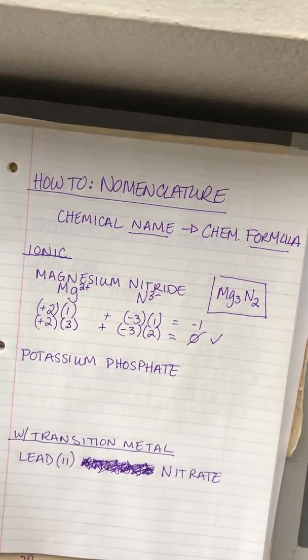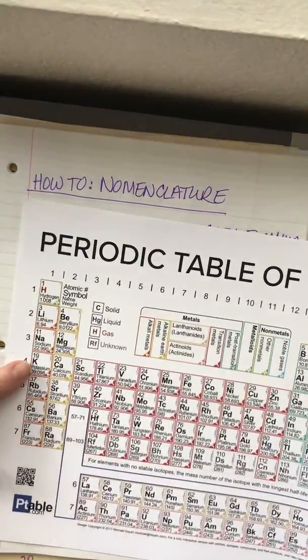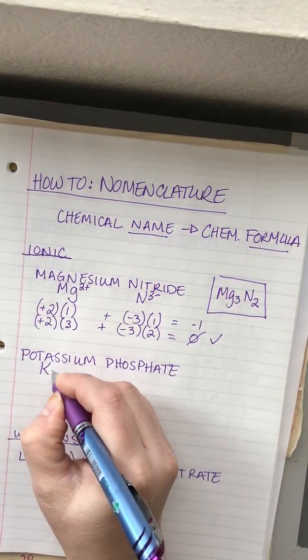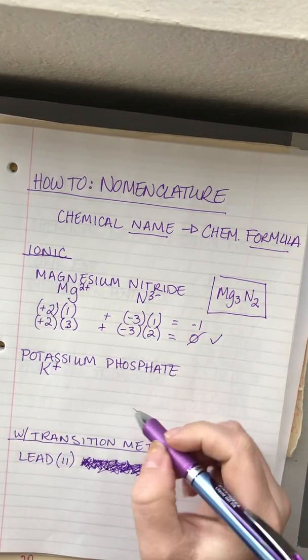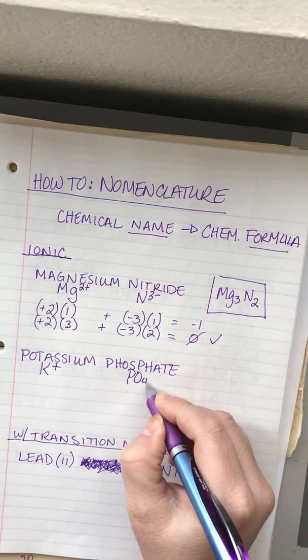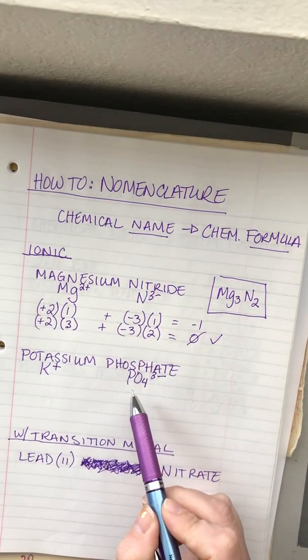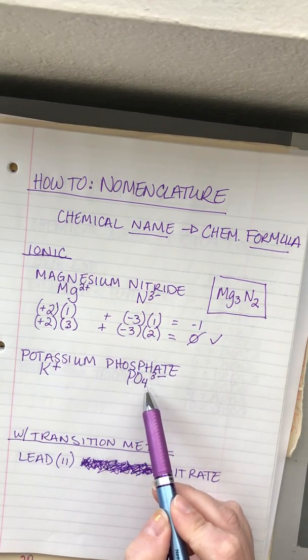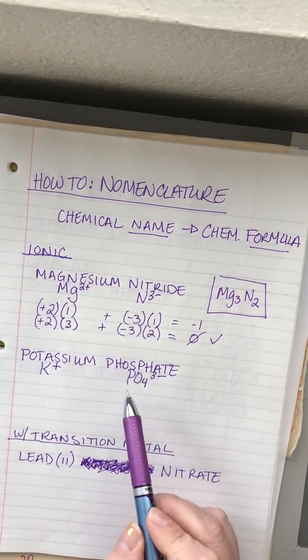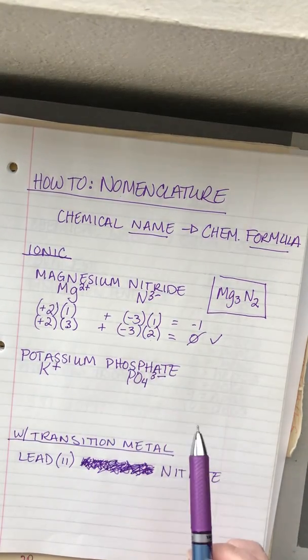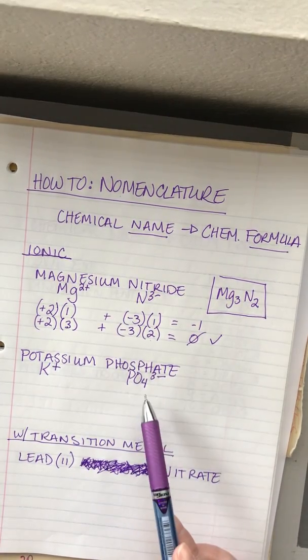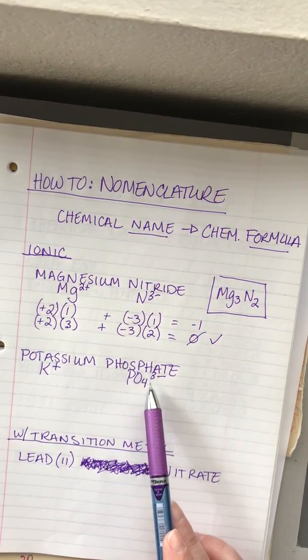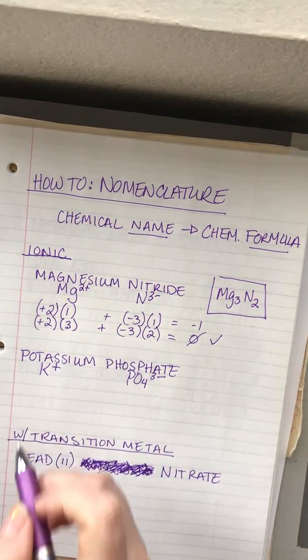Next up we have potassium phosphate. Potassium is in group 1, which means it will have a plus 1 charge. Phosphate is from our list of polyatomic ions and has a chemical formula of PO₄³⁻. This is something you'll need to look up until you've memorized it, but eventually you'll need to know that phosphate is always PO₄³⁻.